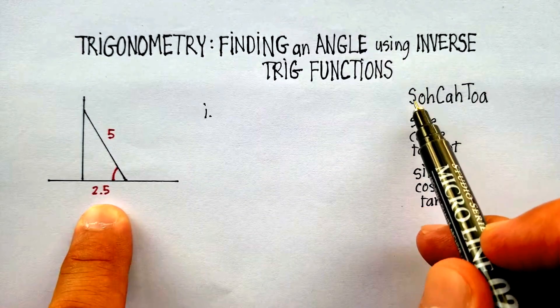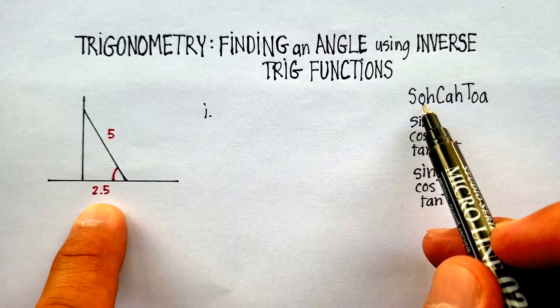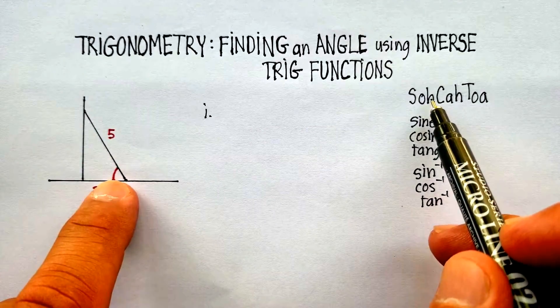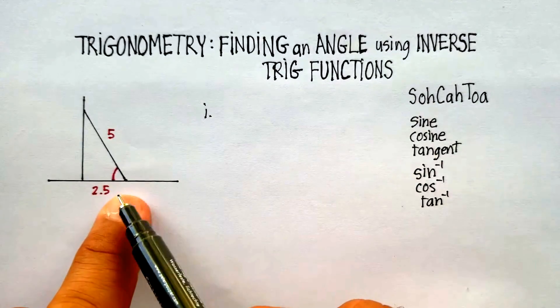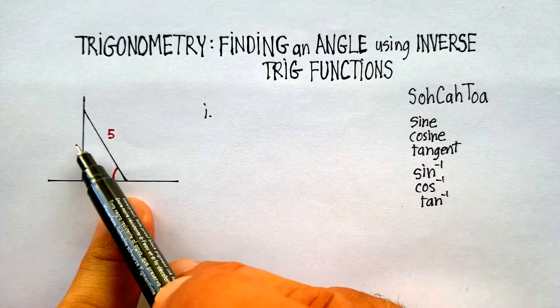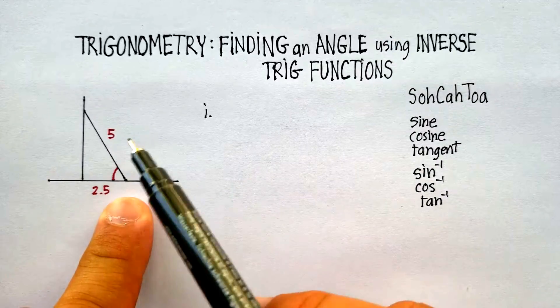Well, SOHCAHTOA tells me which one of the trig functions to use. The sine would be found by saying the opposite from the angle over the hypotenuse of the triangle that's formed. Now, if we go over here and look at that, sine over hypotenuse, we don't have the information here. So we have two unknowns. So we don't want to use that.